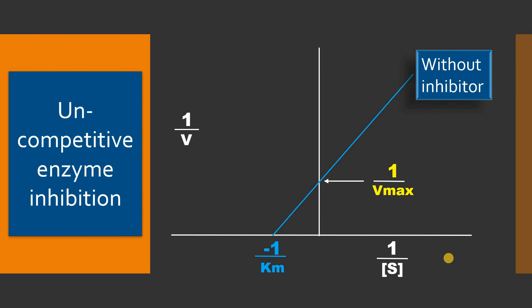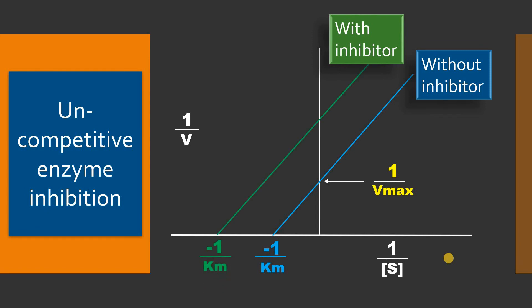If you add an uncompetitive inhibitor to this reaction, the graph shifts and you can see that -1/Km decreases and 1/Vmax also decreases. The two lines are parallel — a hallmark of uncompetitive inhibition. So this is the kinetics of uncompetitive enzyme inhibition: there is both a decrease in Vmax and Km.